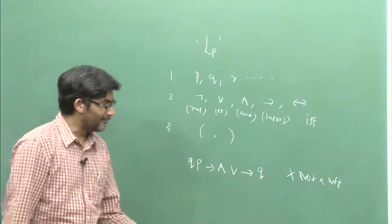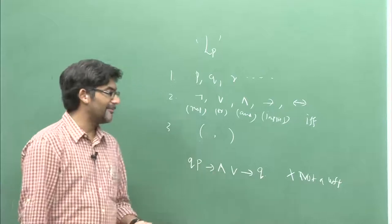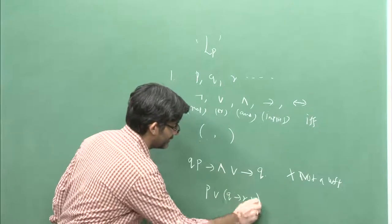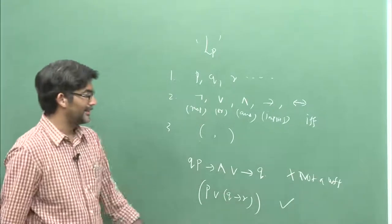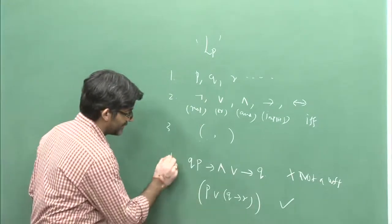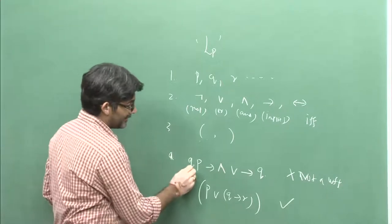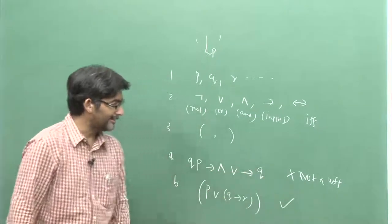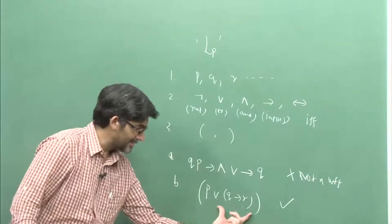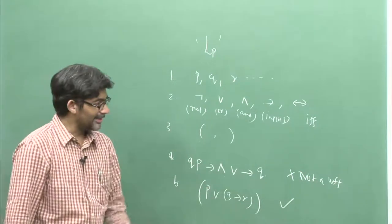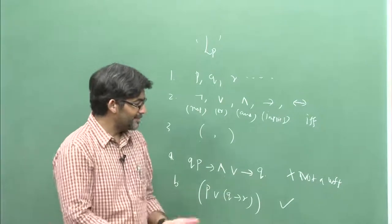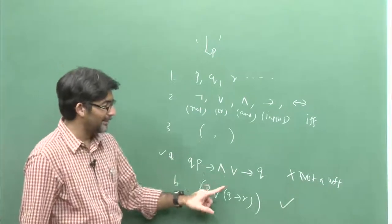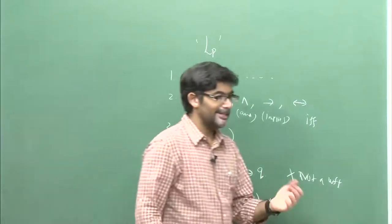So what definition allows us to say that one string is a well-formed formula and another is not? Here is the definition of well-formed formula. The first clause states that every propositional variable — p's, q's, r's — which stand for atomic sentences, are already well-formed formulas. That is the first thing.